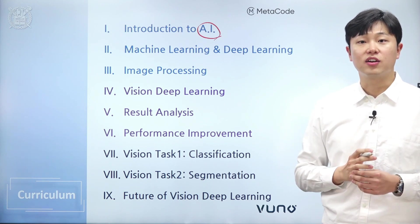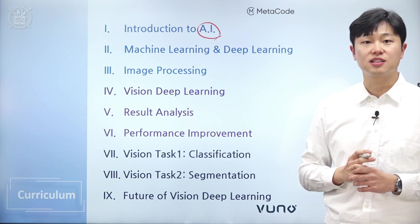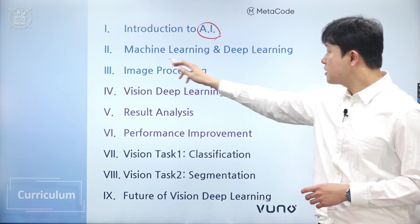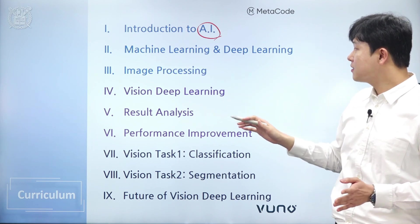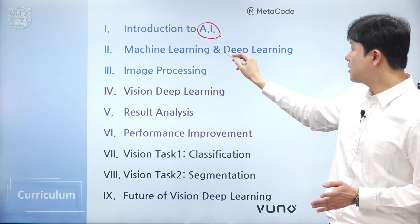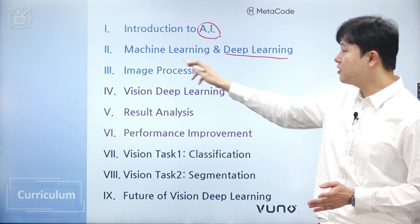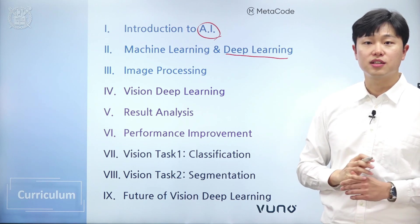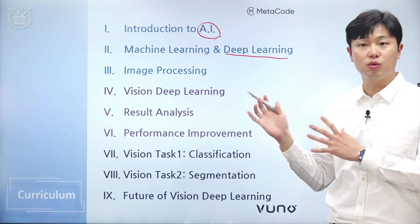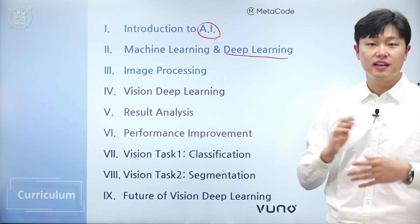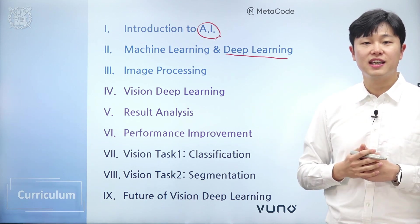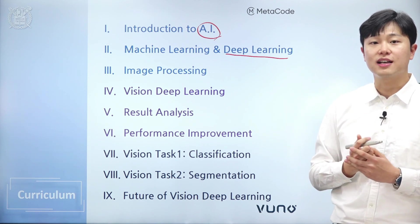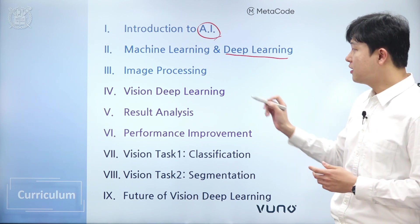Then, we'll define what AI is and what machine learning and deep learning are. Next, in the second lecture, machine learning and deep learning, we'll focus more on deep learning. We'll clarify the differences between machine learning and deep learning. Since deep learning is a subset of machine learning, we'll delve deeper into the theory behind machine learning.